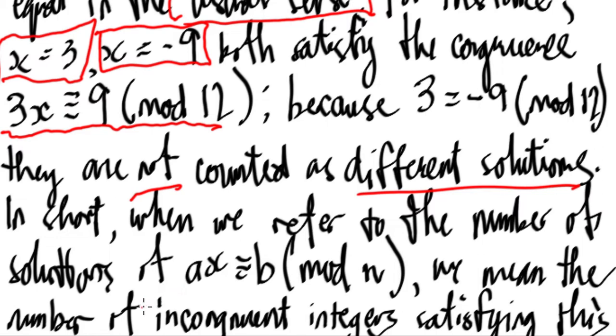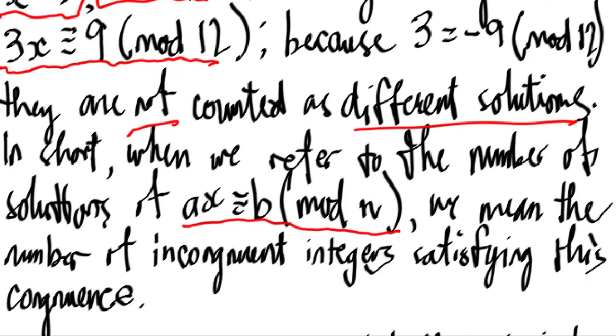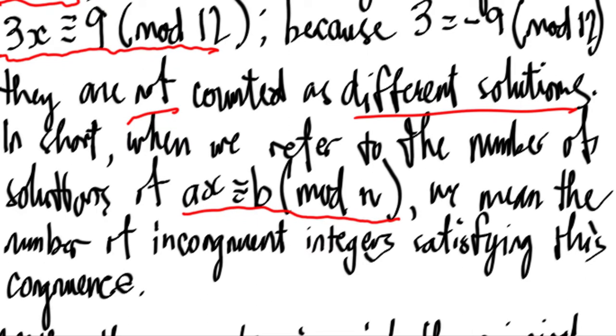In short, when we refer to the number of solutions of the linear congruence ax is congruent to b mod n, we mean the number of incongruent integers satisfying this congruence.